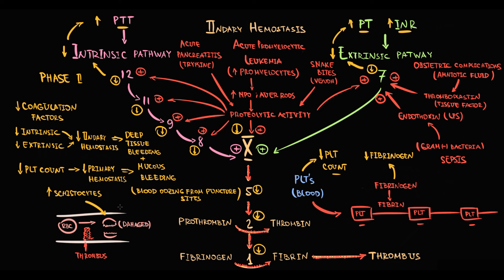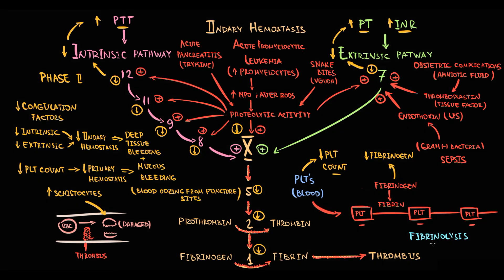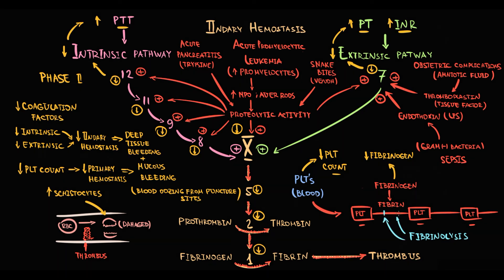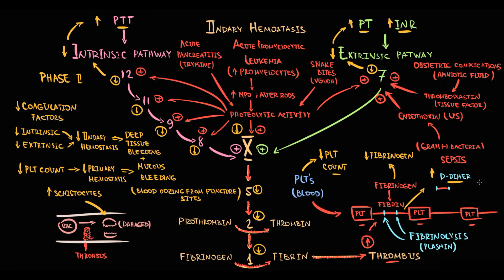Once a thrombus is formed, the thrombus should be removed. To remove thrombus, our organism activates fibrinolysis. With fibrinolysis, plasmin degrades fibrin. The product of fibrin degradation is called D-dimer. Because in DIC a massive amount of thrombi are formed, this will result in formation of a massive amount of D-dimer. D-dimer level will be significantly elevated.